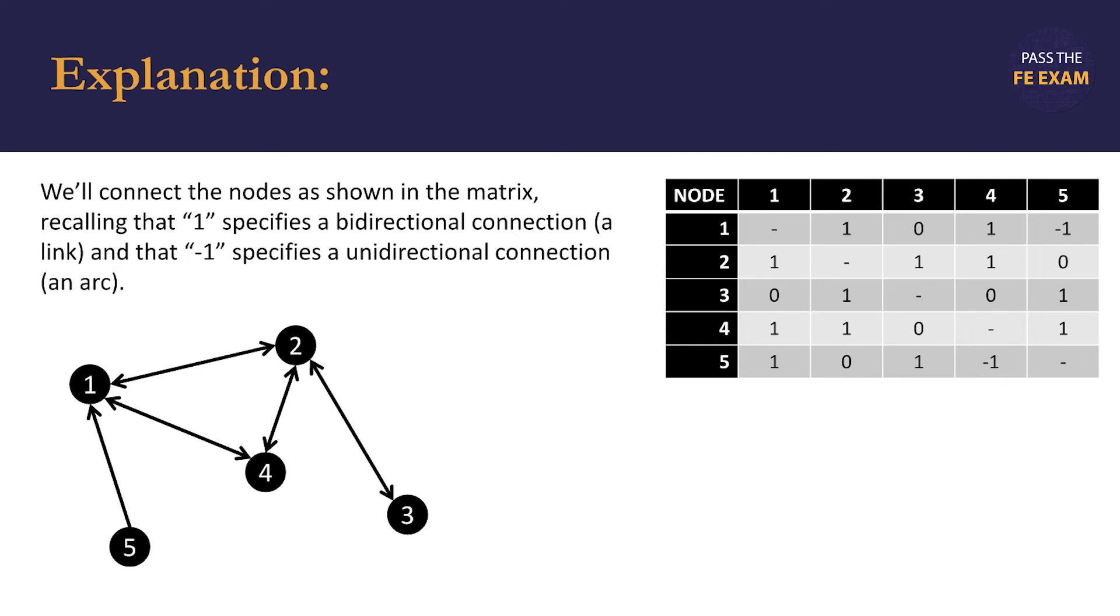Now we're done with node number two. We'll move on to node number three and do the same thing. We note that there's a link missing to node number five, and since we've already done node number two, we've already accounted for the link between nodes two and three.